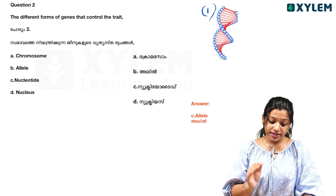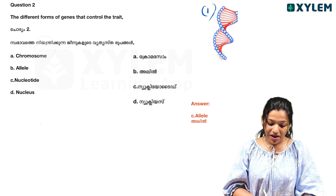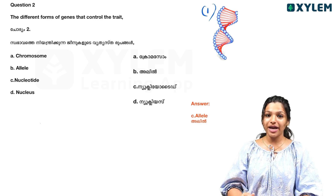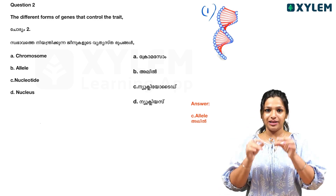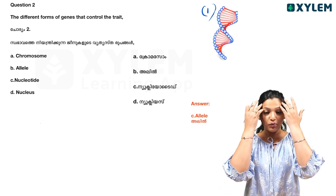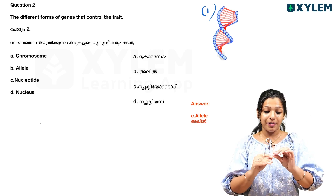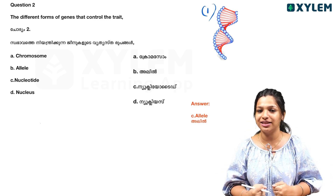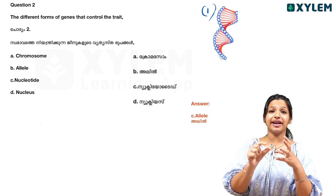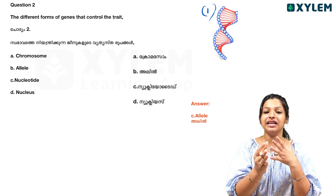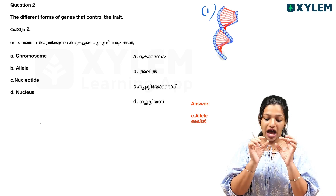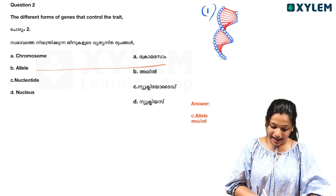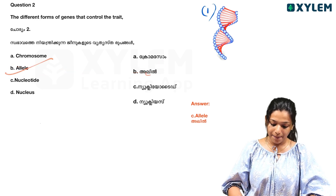The second question is: the different forms of genes that control a trait. We know that we have one trait — like the nose, the skin — there are different characters that we have in the body. One character, one trait, gives us different forms. We call it an allele. The answer is B.